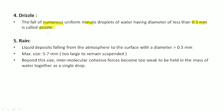So you can say drizzle is a form of rain. Liquid deposits falling from the atmosphere to the surface with a diameter which is greater than 0.5 mm is called rain. It means if the diameter is greater than 0.5 mm, it is called rain. And if the diameter is less than 0.5 mm, it is called drizzle.